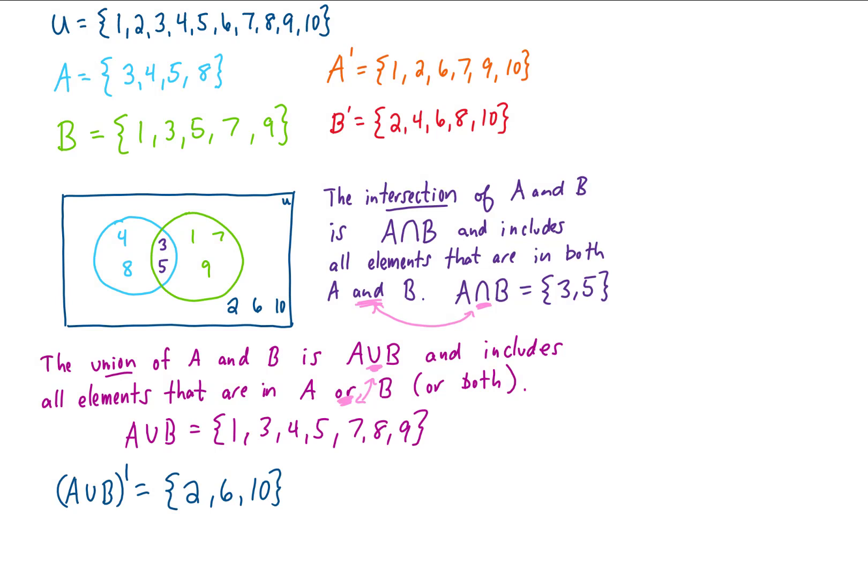Let's make up another example. Let's say I wanted you to find A complement intersected with B. Well what we would need to do is we would need to find A complement, we would need to make sure we have B, and then we would look at the intersection of those two sets. Fortunately above we already have A complement written out. It includes the elements 1, 2, 6, 7, 9, and 10. We also have B written out and that includes the elements 1, 3, 5, 7, and 9. Now the intersection of those two sets is all of the elements that are in both sets. That would be 1, 7, and 9.